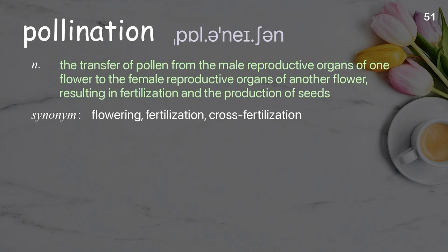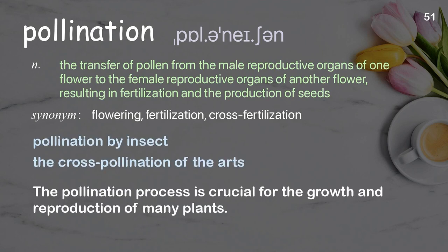Pollination: The transfer of pollen from the male reproductive organs of one flower to the female reproductive organs of another flower, resulting in fertilization and the production of seeds. Examples: Pollination by insect. The pollination process is crucial for the growth and reproduction of many plants.